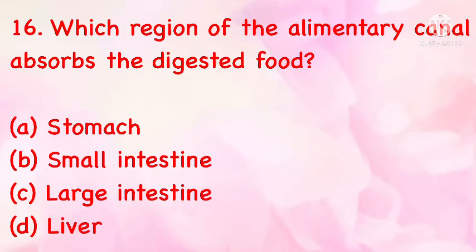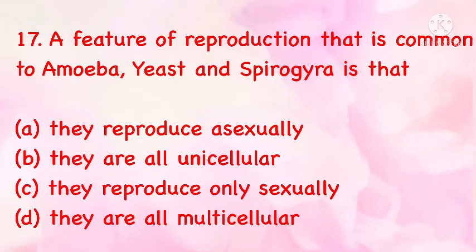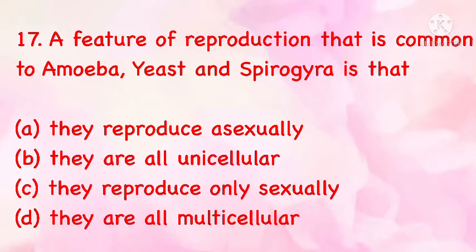Which region of the alimentary canal absorbs digested food? (a) stomach, (b) small intestine, (c) large intestine, (d) liver. The correct answer is (b): small intestine. A feature of reproduction common to amoeba, yeast, and spirogyra is: (a) they reproduce asexually, (b) they are all unicellular, (c) they reproduce only sexually, (d) they are all multicellular. The correct answer is (a): they reproduce asexually.